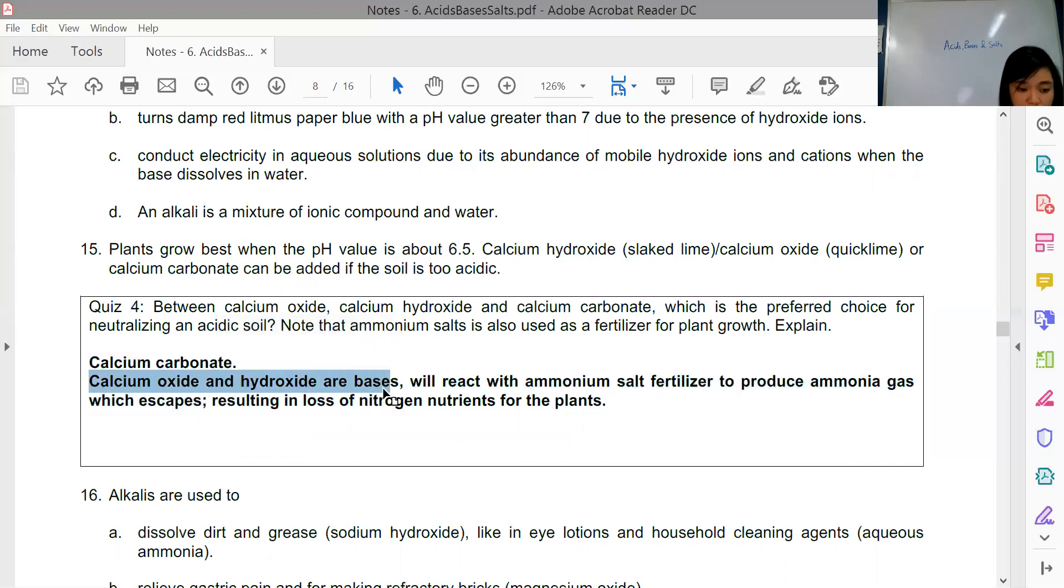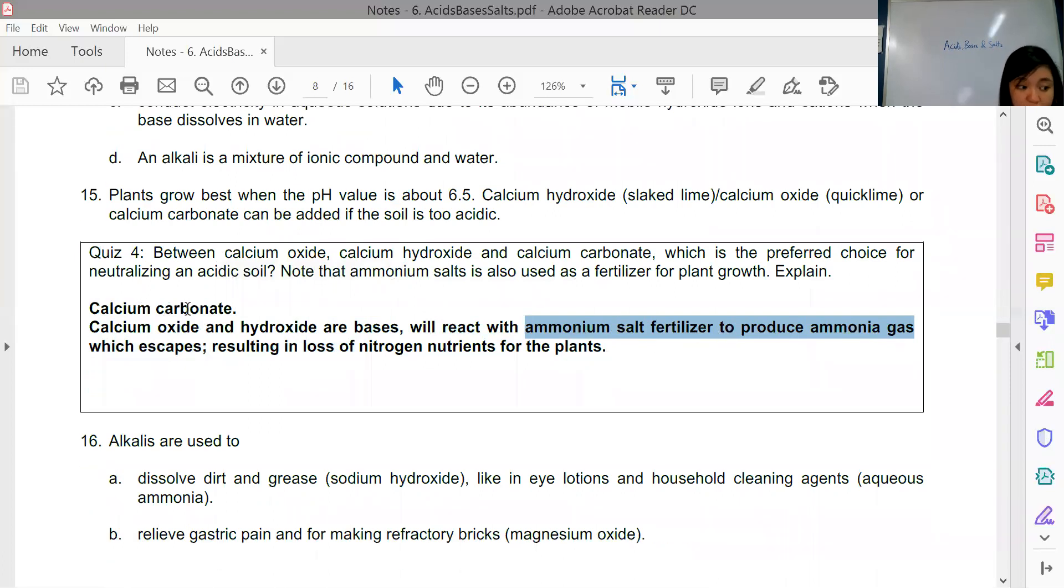They will react with the ammonium salt fertilizer to produce ammonia gas. That's why we use carbonate because carbonate will not react with your ammonium salt. But at the same time, it will neutralize the effect of the acidic soil.